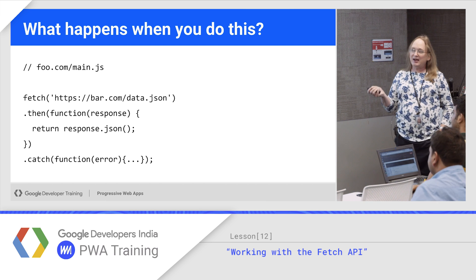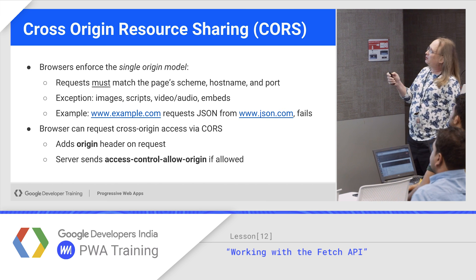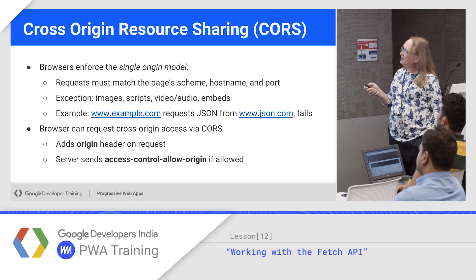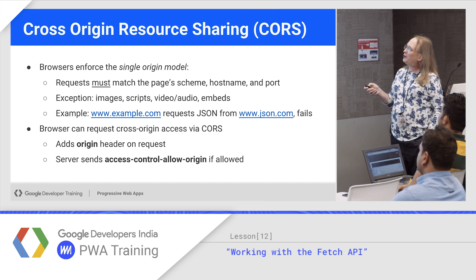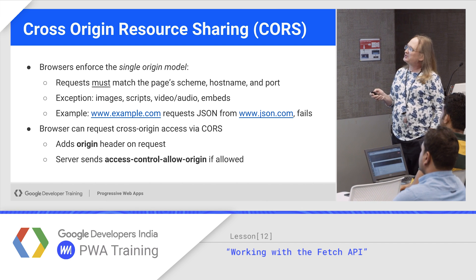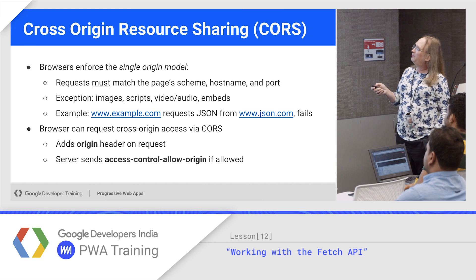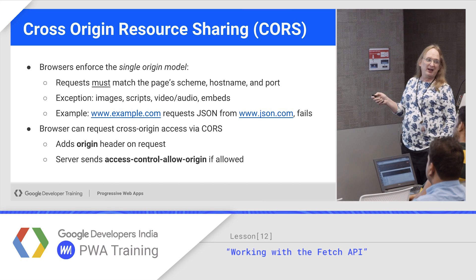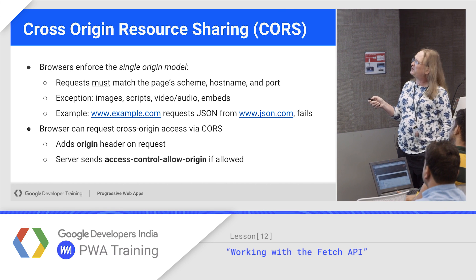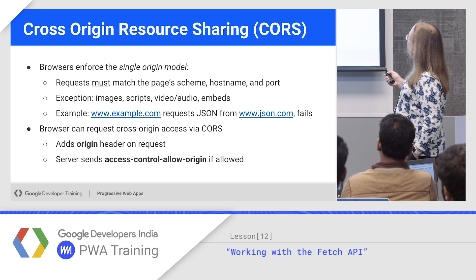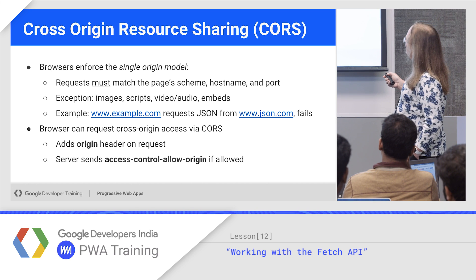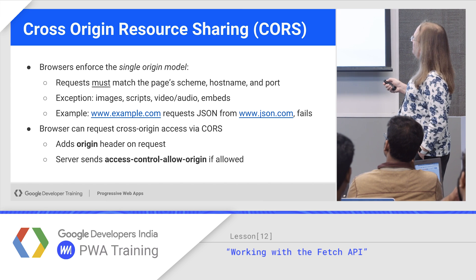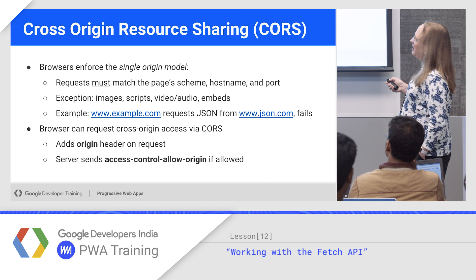So there's now a standardized way to work cross-origin called Cross-Origin Resource Sharing, CORS. The browser still enforces the single origin model. Origin, by the way, is a combination of scheme — so HTTP versus HTTPS are two different origins — the hostname, and the port. If any of those change, it's a new origin. The exceptions for cross-origin are images, scripts, media content like video and audio, and embedded objects.